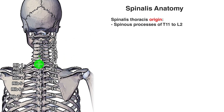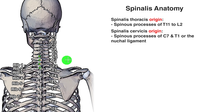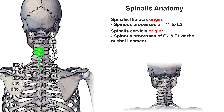Next we can see the origins of the spinalis cervicis, marked with a white outline. They originate on the spinous processes of C7 and T1. In addition to the spinous processes, it can also originate from the nuchal ligament, which is a ligament that runs down the back of the neck. I'll put a picture on screen of the nuchal ligament so you can better understand where it's located and how it looks.